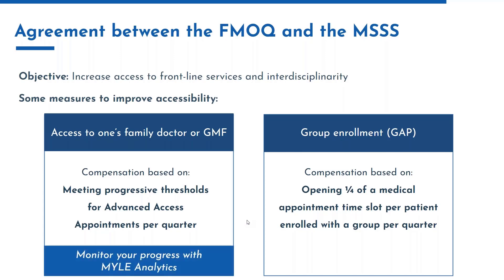The second measure is related to group enrollment, and most people refer to it as the GAP initiative. The compensation for this measure is based on opening a quarter of a medical appointment time slot per patient enrolled with a group per quarter — essentially one medical appointment time slot per patient enrolled in a group per year. The first measure is about appointments that are booked, and the second is about the offering — two specific definitions that have generated a lot of questions.